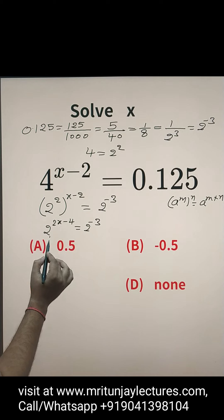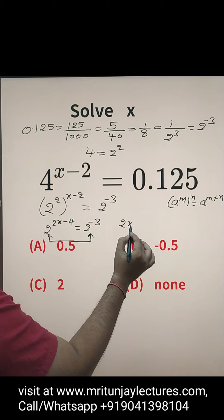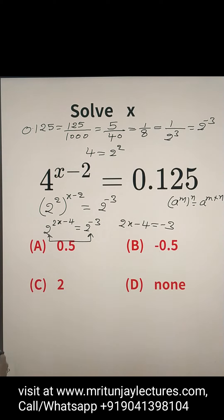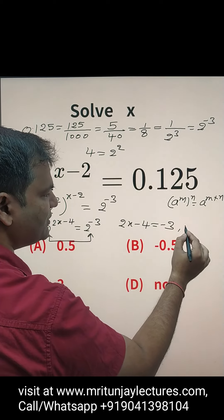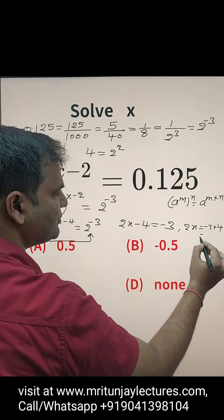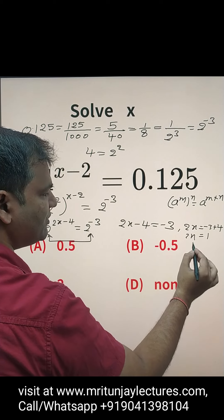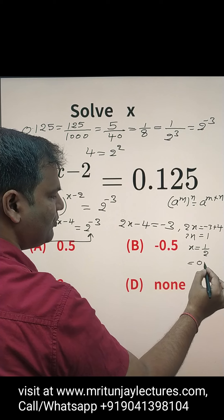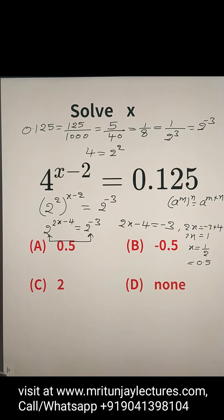Now, bases are the same, so powers are compared. So 2x minus 4 equals minus 3. Therefore 2x equals minus 3 plus 4, which is 1. So x equals 1 by 2, and that value is 0.5.